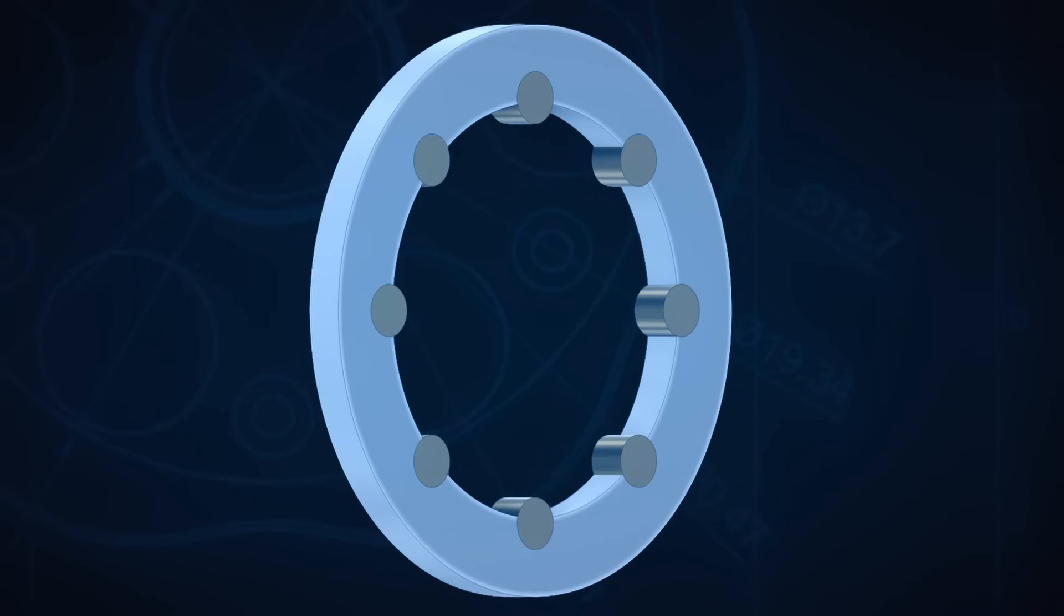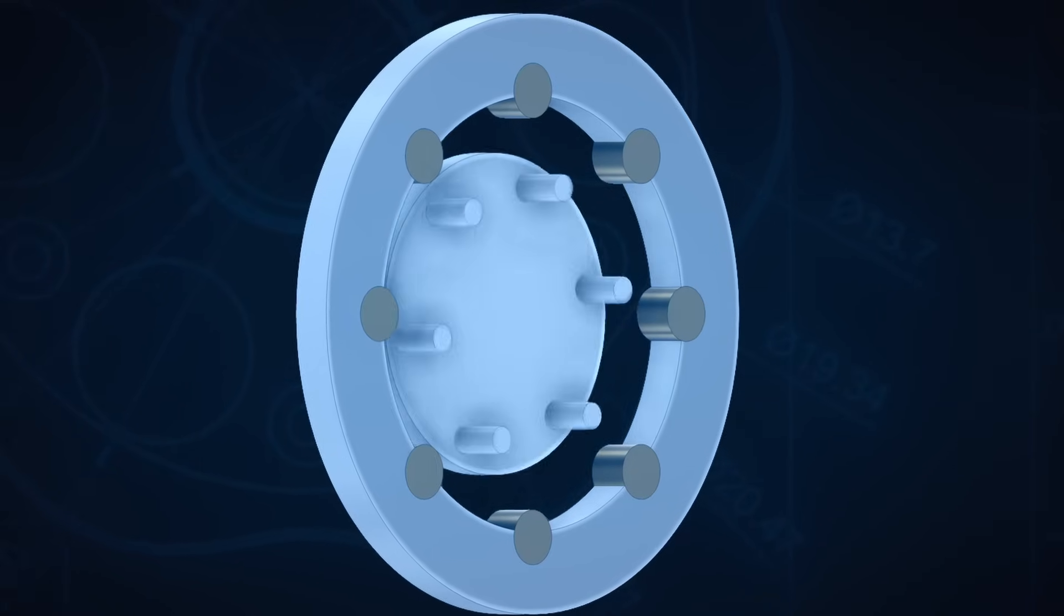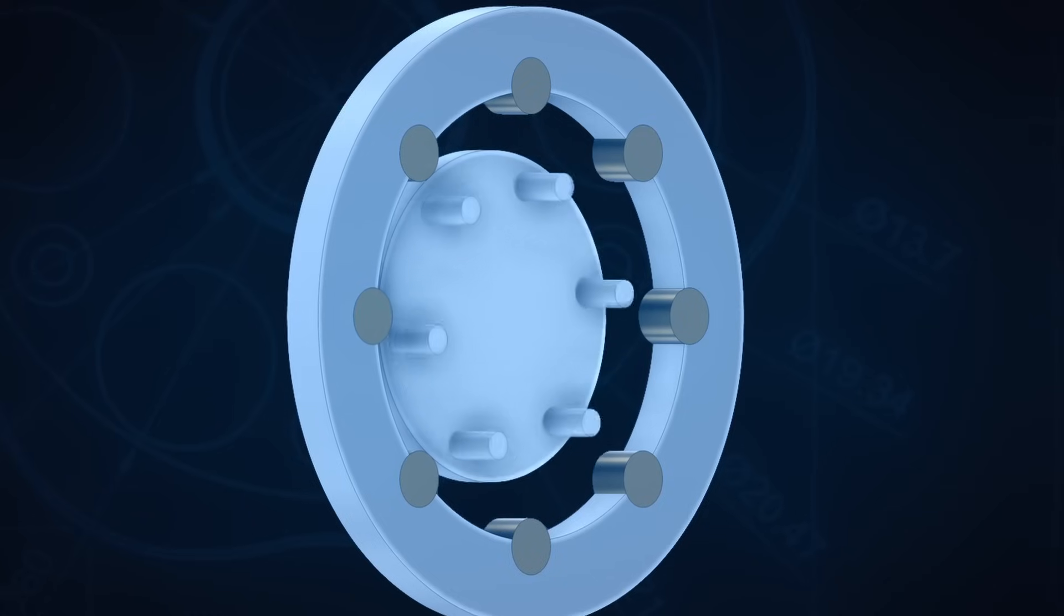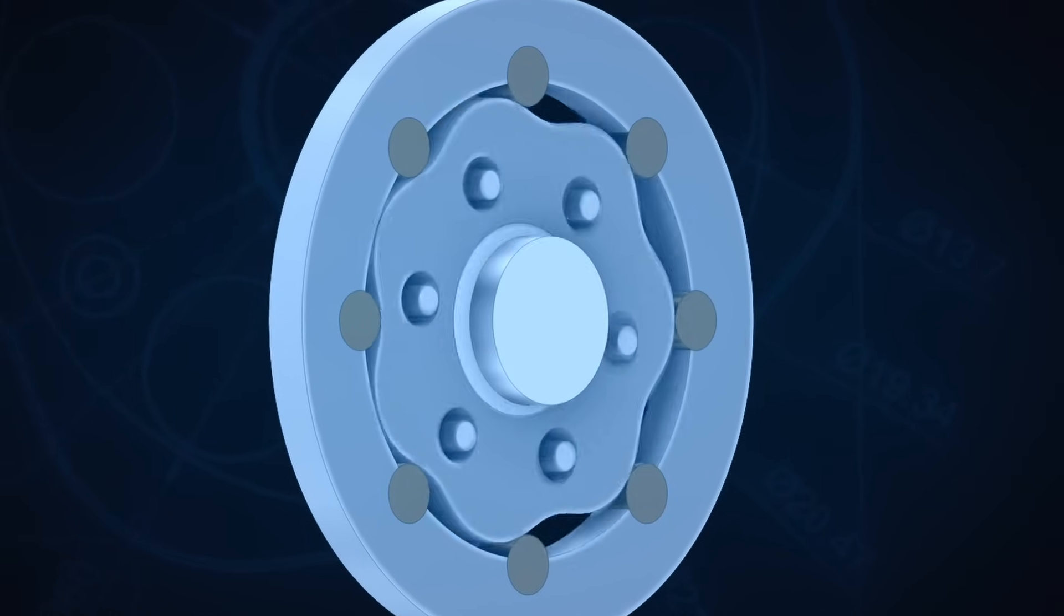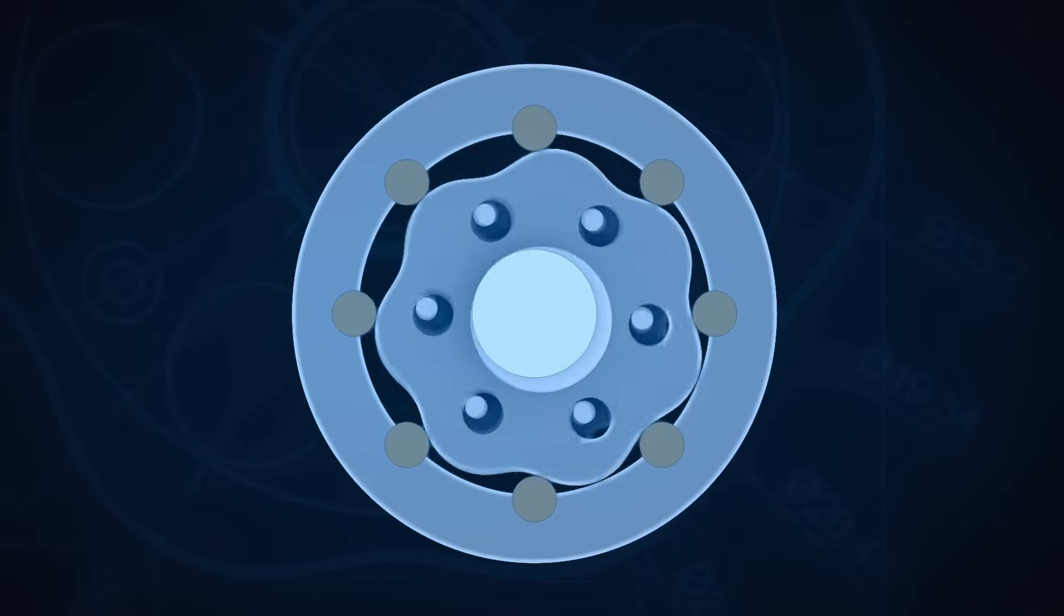As I said, there are a ton of videos on how cycloidal drives work. So I'm going to keep this next part really brief and quickly go over the basic parts just to get us on the same page. Basically, there's the outer stationary ring with a number of rollers, an output ring that contains a number of pins, then the cycloidal disc itself, and finally an eccentric shaft as the input to the reducer.